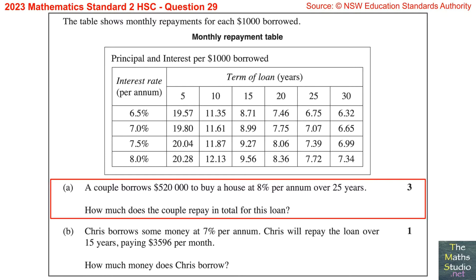Question 29. The table shows monthly repayments for each $1,000 borrowed. Part A: a couple borrows $520,000 to buy a house at 8% per annum over 25 years. How much does the couple repay in total for this loan?